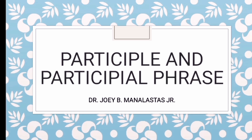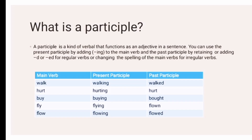Participle and participle phrase presented. A participle is a kind of verb that functions as an adjective in a sentence, meaning to say, a participle modifies a noun or a pronoun. You can use the present participle by adding -ing to the main verb, and the past participle by retaining or adding -d or -ed for regular verbs, or changing the spelling of the main verb for irregular verbs.